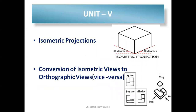The last unit is isometric projections, covering planes, lines, and solids. They will most probably ask the isometric projection of a solid, or the conversion of isometric to orthographic projection — meaning you convert a given 3D object to 2D or vice versa. This is a single 15-mark question, appearing as question 9 or 10. Unit 5 is questions 9 or 10.